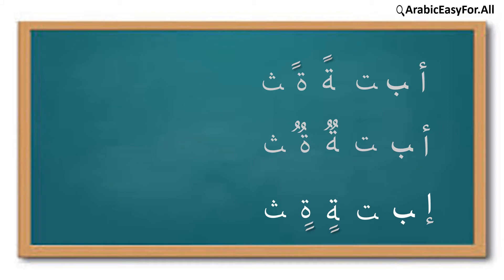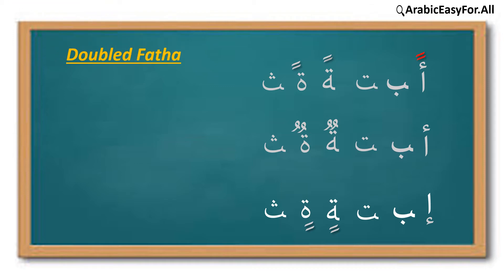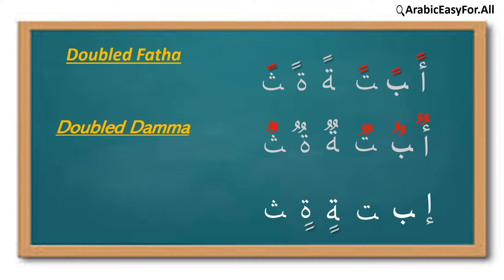Doubled signs are always put at the end of the word. In doubled فتحة we say 'an', and in doubled كسرة we say 'in'.